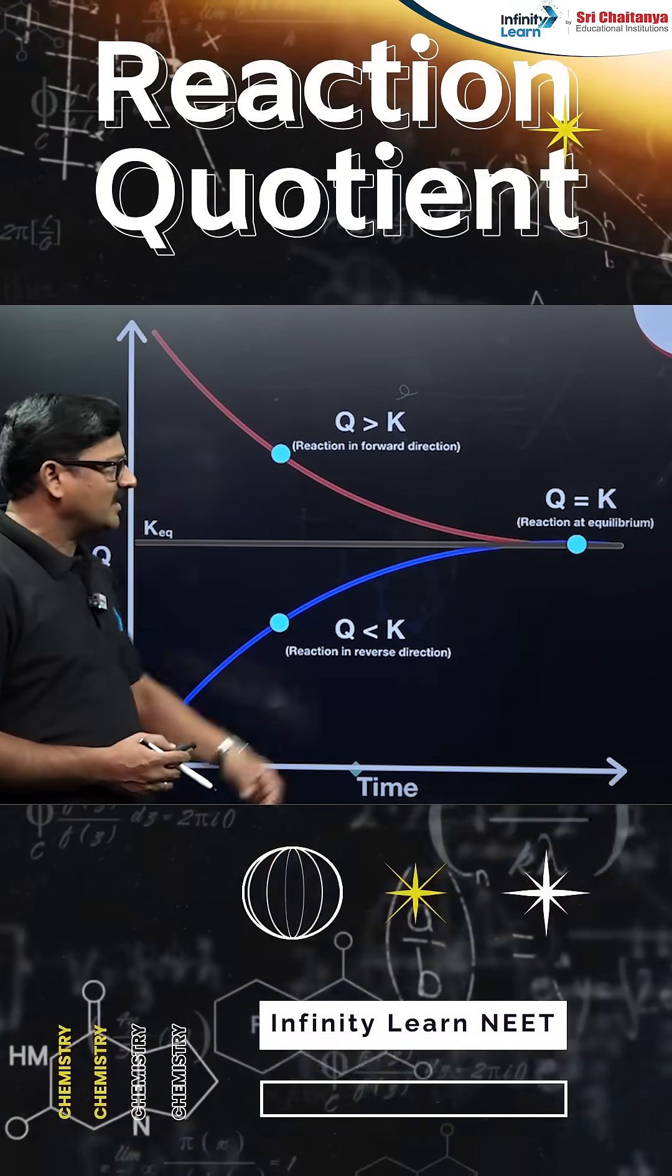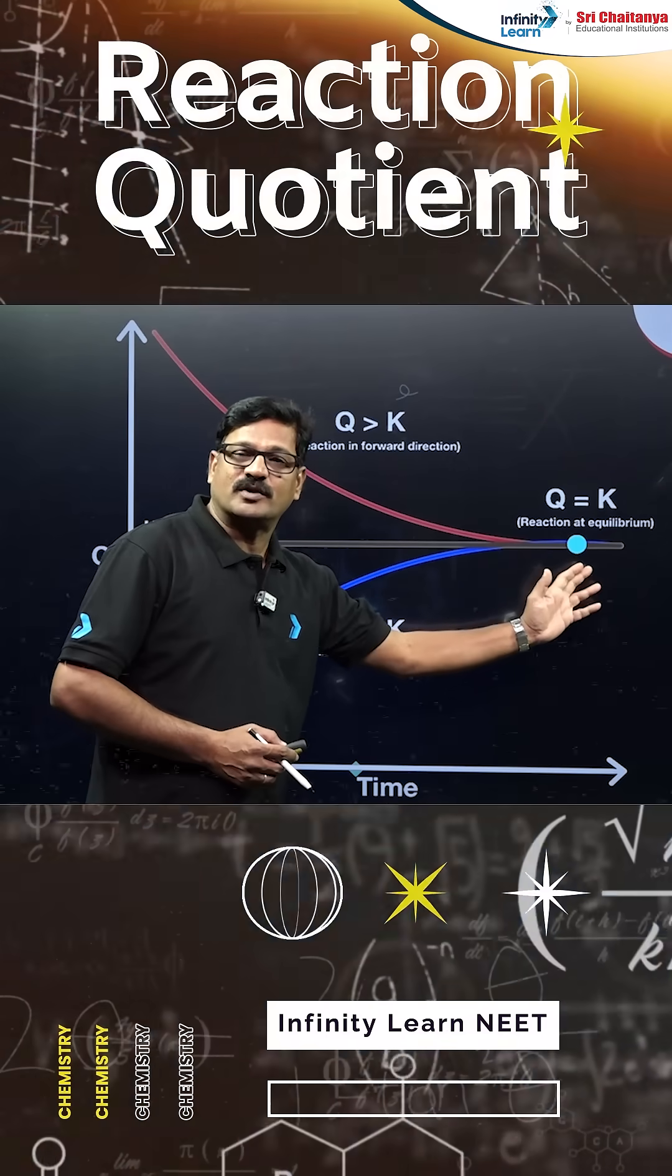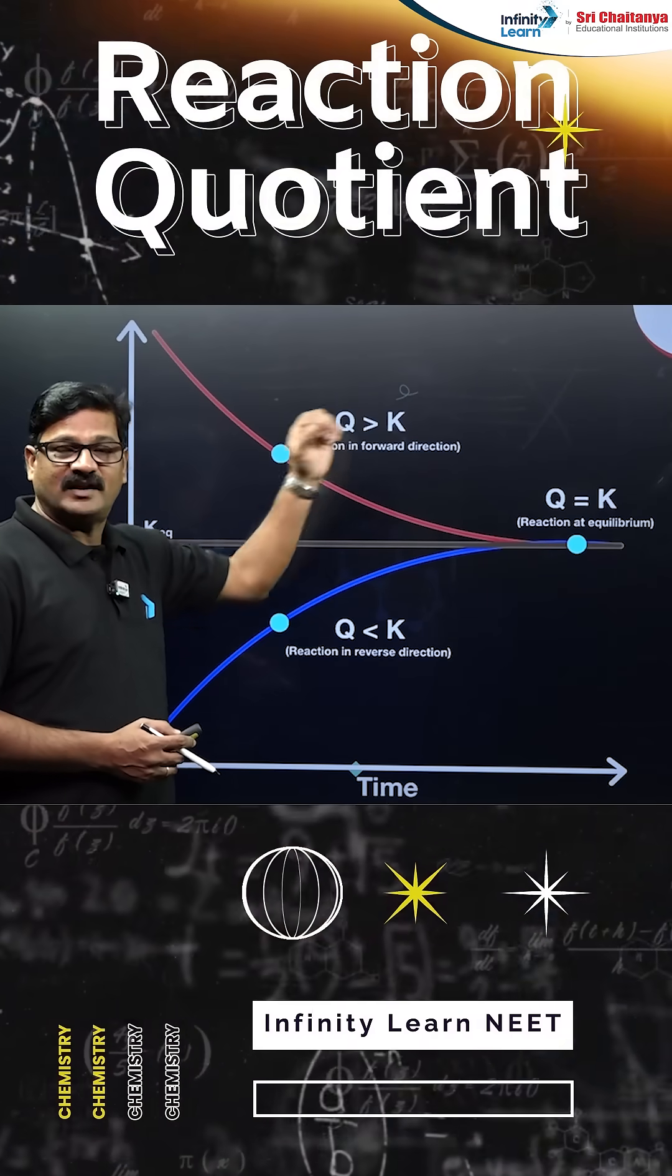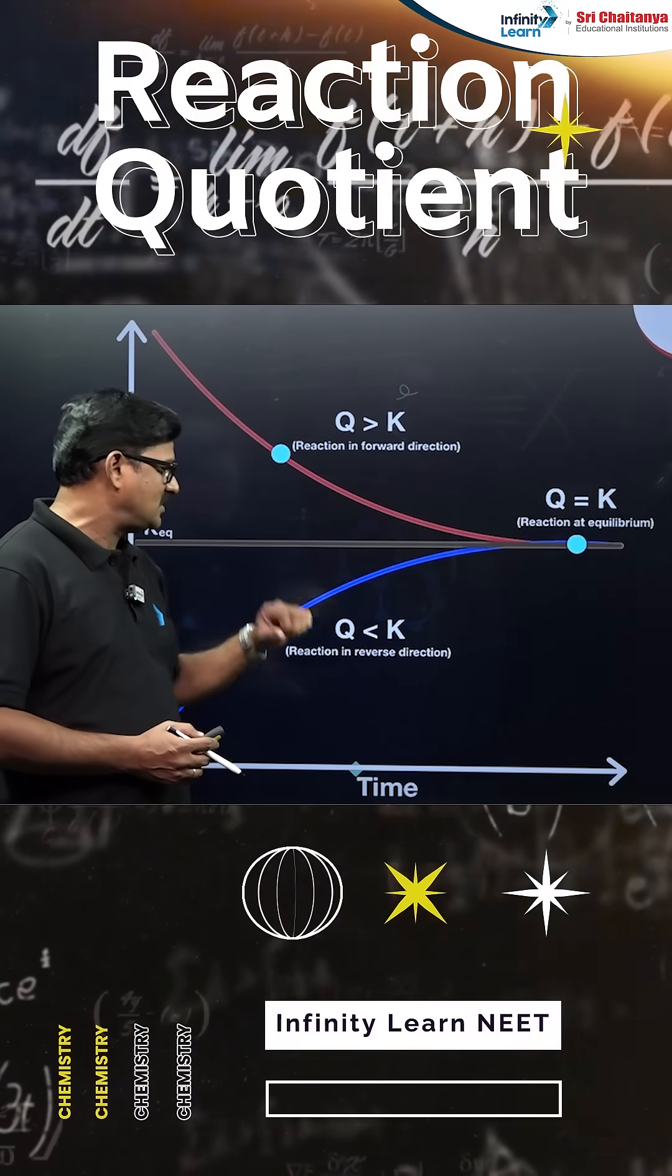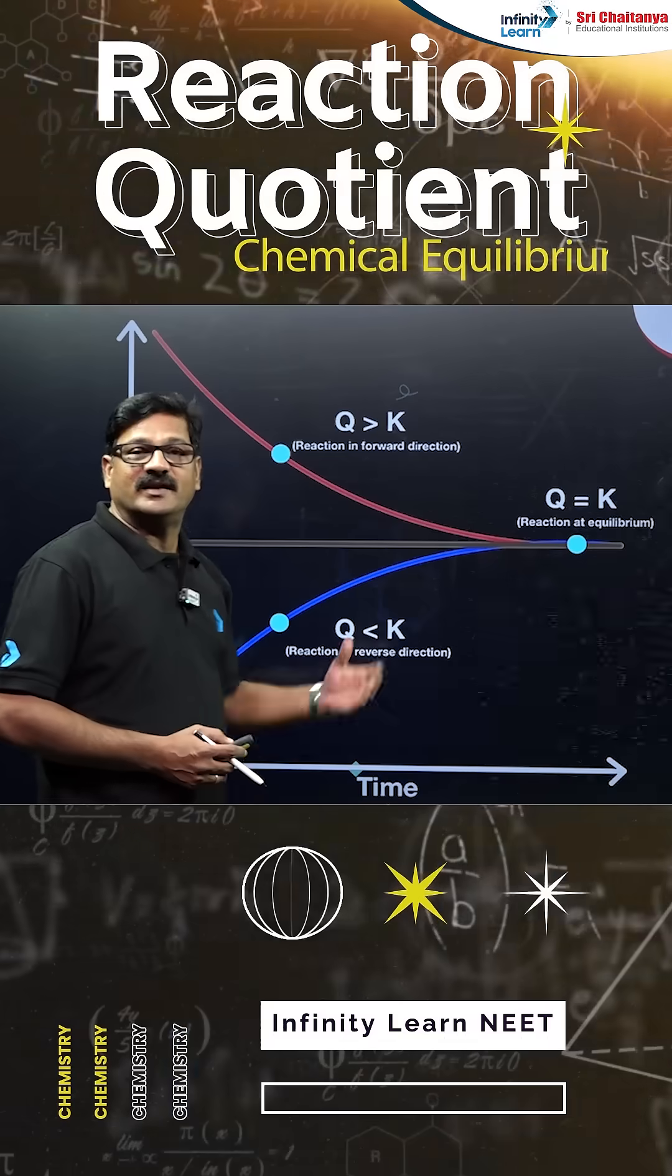If Q is greater than K, the reaction favors the backward direction. If Q is less than K, the reaction favors the forward direction. The magnitude of the equilibrium constant and reaction quotient determines this.